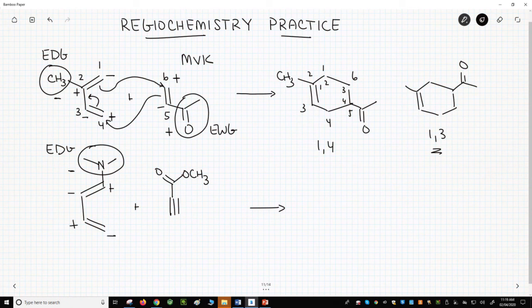The dienophile now contains an alkyne. That's fine. As long as we have at least one CC pi bond, and we do. The ester is an EWG. So it's plus. Assign our charges.